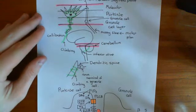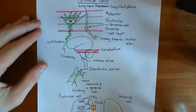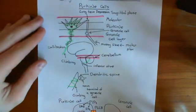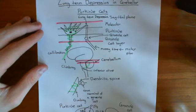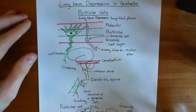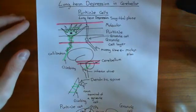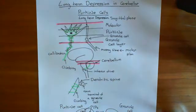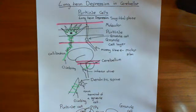Welcome to this third video on motor learning in the cerebellum and how long-term depression in cerebellar Purkinje cells is really important for that, and how that long-term depression is actually achieved molecularly.